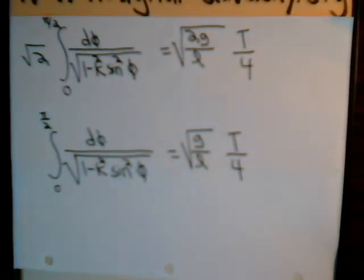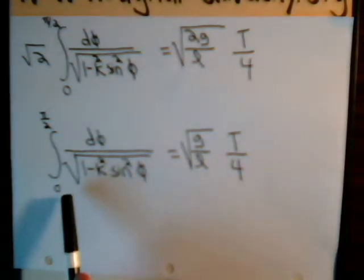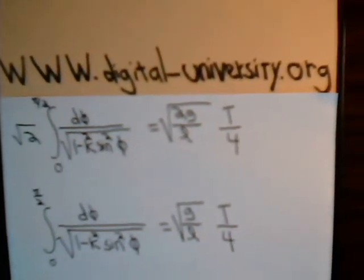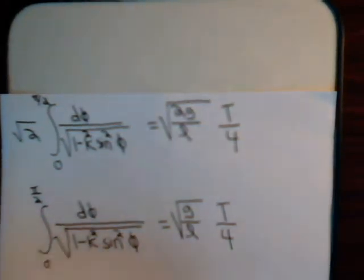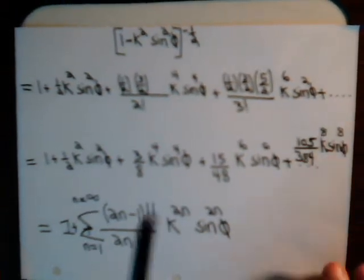And the way to understand that or the way to approach it is to expand this out in a Taylor series type of expansion. We'll address that in just a moment. Remember, the playlist for all the videos is at the website digital-university.org. Now, here in the denominator, we've got the square root, or this is 1 minus k squared sine squared phi to the minus one-half power, which we have written right here.